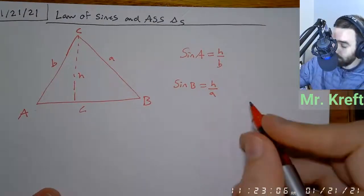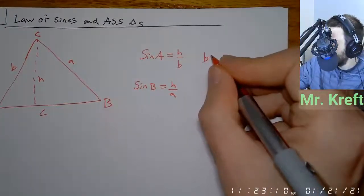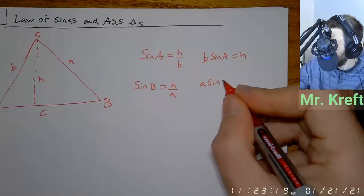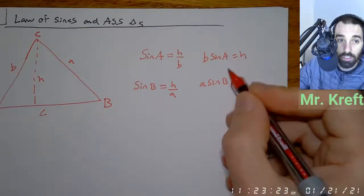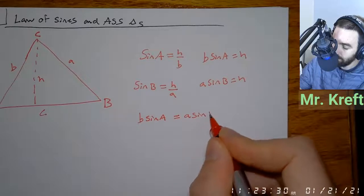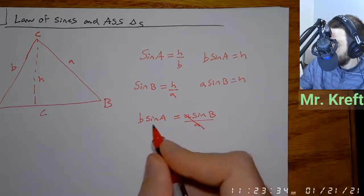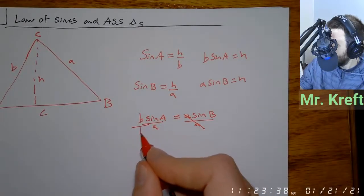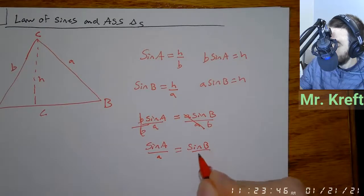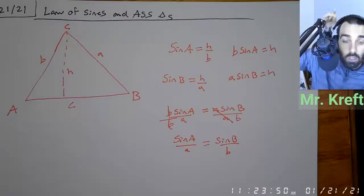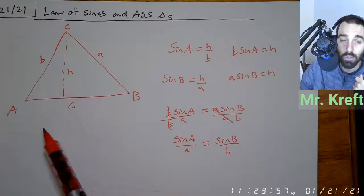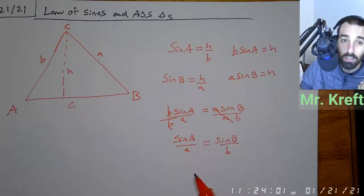I'm going to solve both of these for H. I get B sine of A equals H, and A sine of B equals H. Since they both equal each other, that means B sine of A equals A sine of B. So then I divide by A and divide by B, and I get sine of A over A equals sine of B over B. The reason it's called law of sines is because using sine of two angles in one triangle, they have the same height.